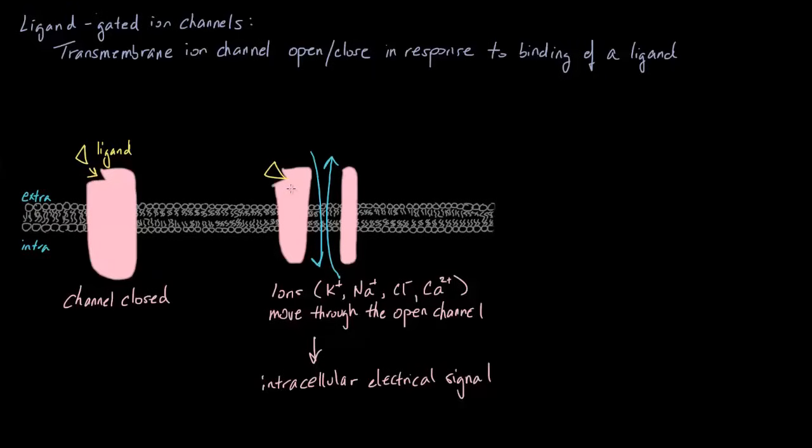Why might that be? Well, we'd have to think about the main purpose of membrane receptors. We have to realize that they generally are meant to respond to extracellular signals, to things that are on the outside of the cell. So generally speaking, ligand-gated ion channels will have the binding site on the extracellular side.